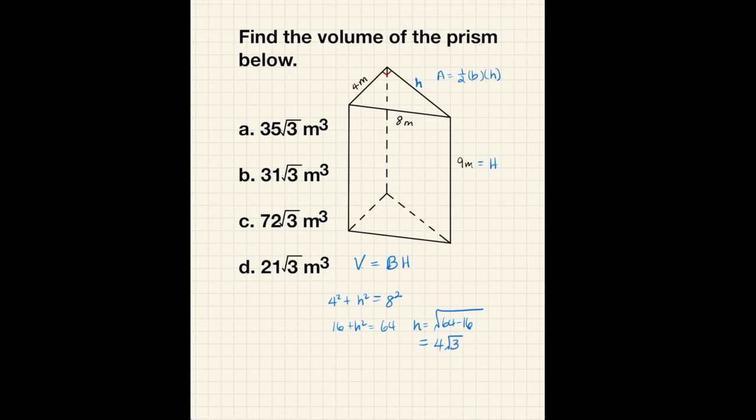Now we can plug this into our area. We get one half times the base which is 4 meters times the height which is 4 times the square root of 3. That is equal to 8 square root of 3 as our area.